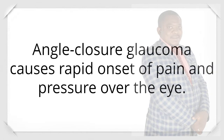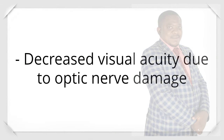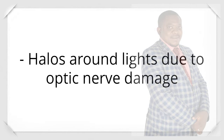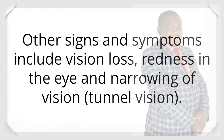Angle-closure glaucoma causes rapid onset of pain and pressure over the eye, blurred vision, decreased visual acuity, and halos around lights — all due to optic nerve damage. Nausea and vomiting occur due to increased intracranial pressure. Other signs and symptoms include vision loss, redness in the eye, and narrowing of vision (tunnel vision).